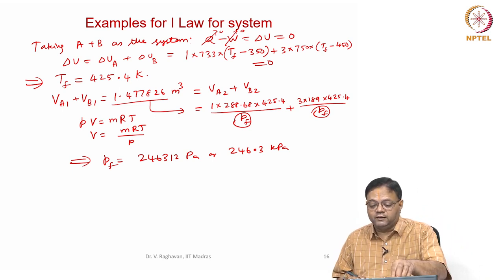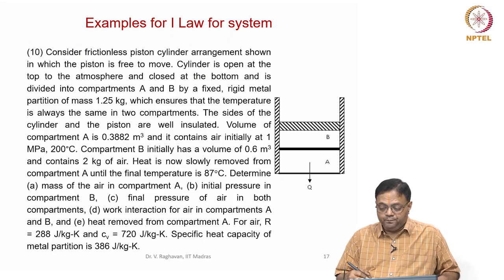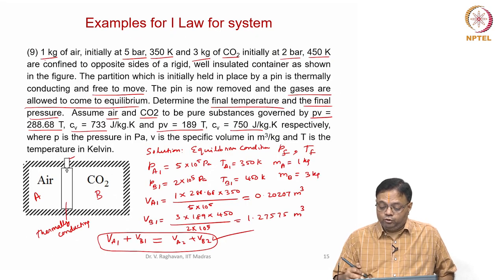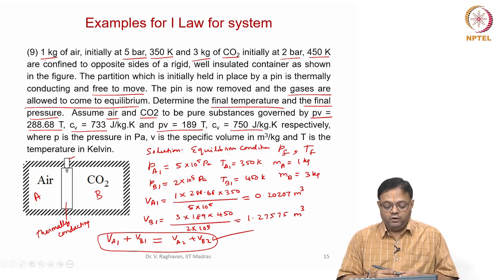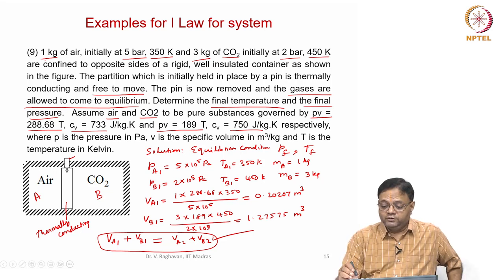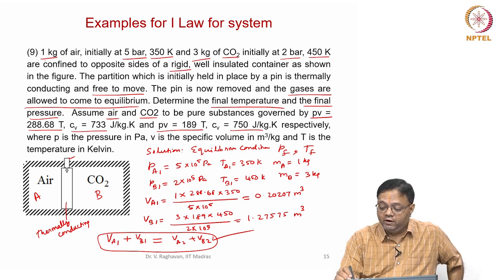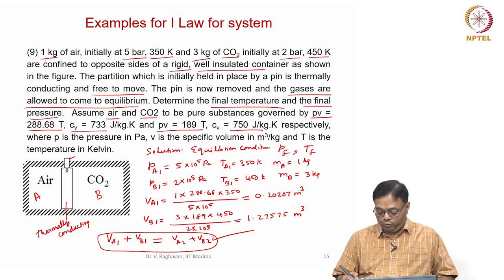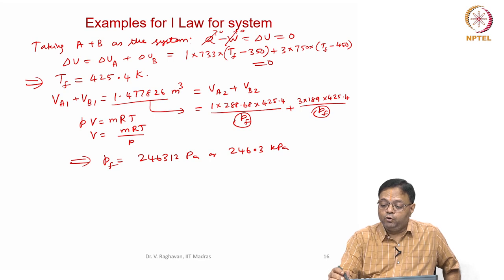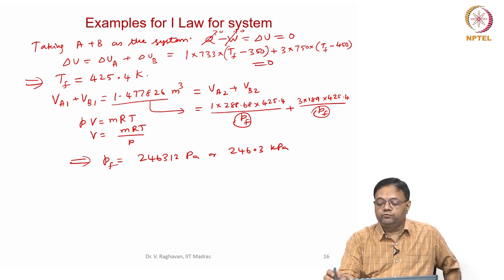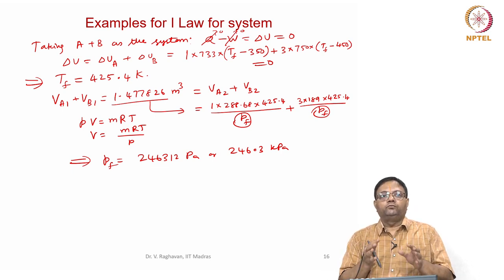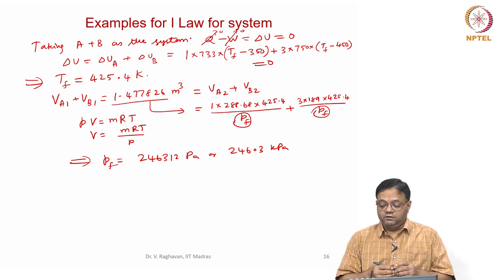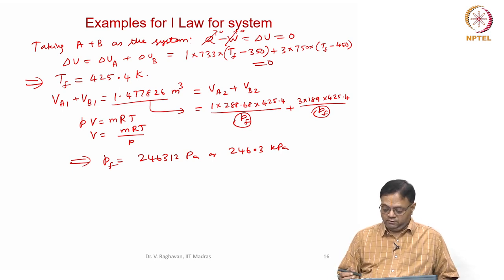In summary, there are two things: first, energy conservation applied to the rigid, well-insulated vessel gives delta U = 0, which yields the final temperature. Second, the conservation of total volume — initial total volume equals final total volume in both chambers — gives the final pressure.